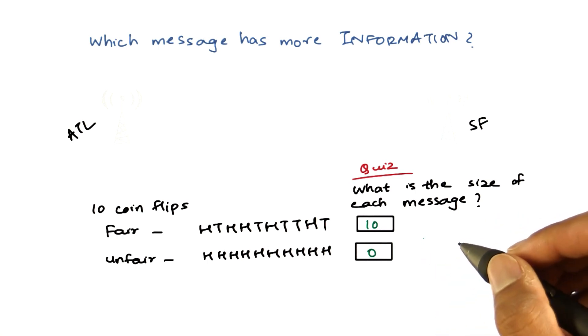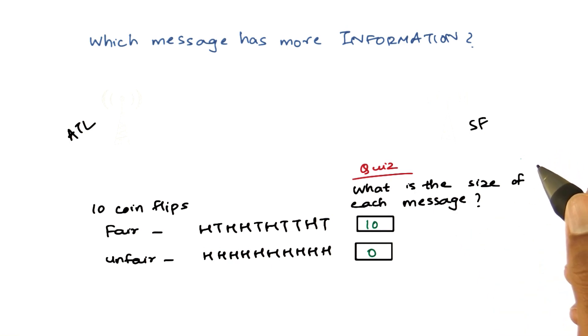Because the result of the flip is always going to be the same. You don't even have to send this message. The folks at San Francisco will already know what is the result of those 10 flips.